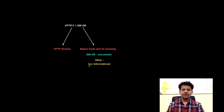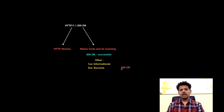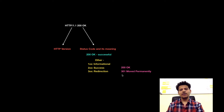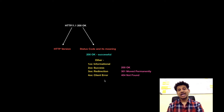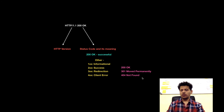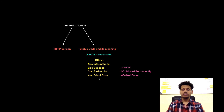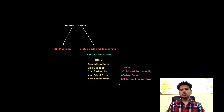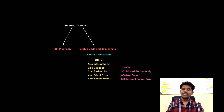Status codes starting with 1 are informational. Status codes starting with 2 are success codes — in this case we saw 200 OK. Status codes starting with 3 are redirectional, and the most common is 301 Moved Permanently. Status codes starting with 4 are client errors, and the most common is 404 Not Found — if the resource is not available, the server sends 404. Status codes starting with 5 are server errors, the most common being 500 Internal Server Error. Each of these status codes will be covered in detail in upcoming videos.